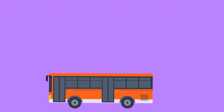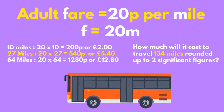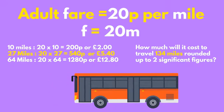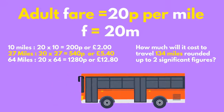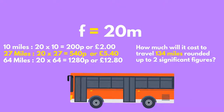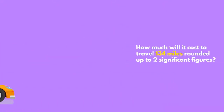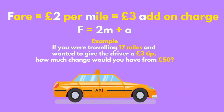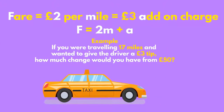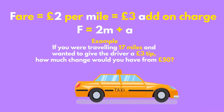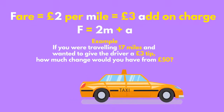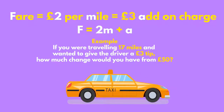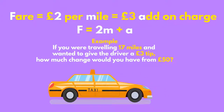Fares on public transport are worked out using algebra with a formula. Generally, the further we travel, the more it costs. A taxi company will have a price per mile or time spent in the vehicle. They will also have an add-on charge so that they always make money, even on shorter journeys.